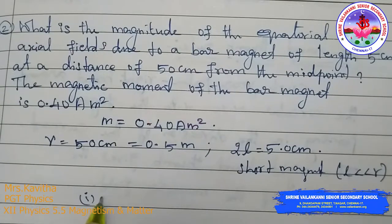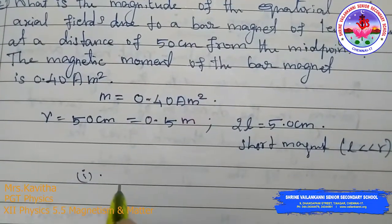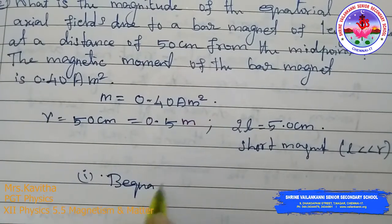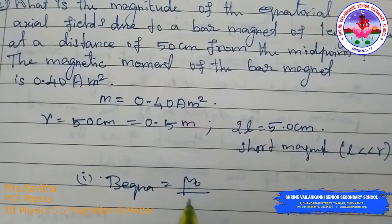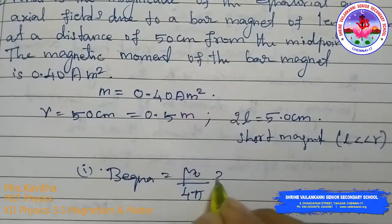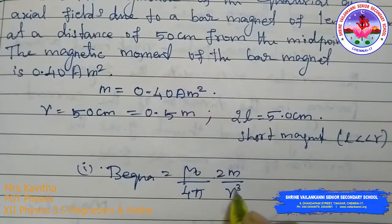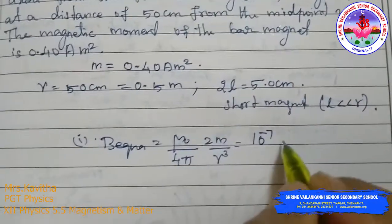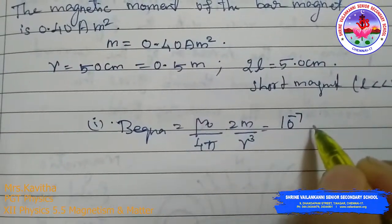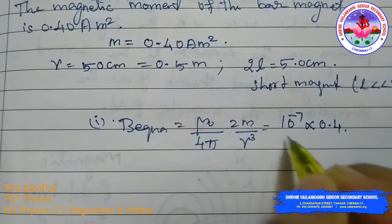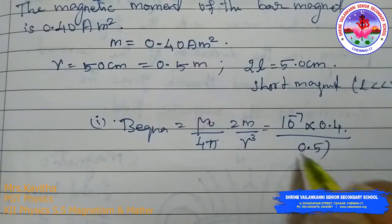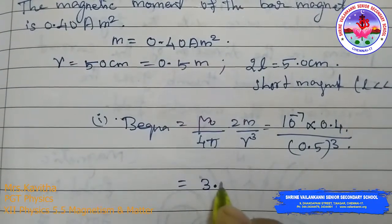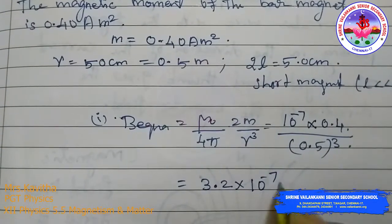For the equatorial field, B_equatorial = (mu_0 / 4pi) times M by R cube, which is 10^-7 times 0.4 divided by (0.5)^3. When you simplify this, you get 3.2 times 10^-7 tesla.